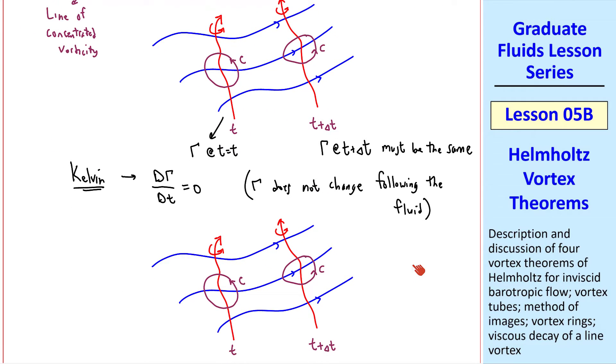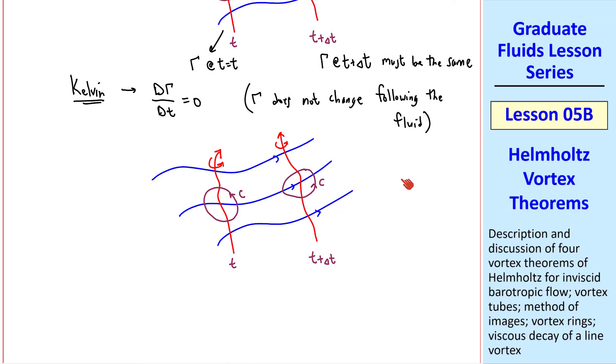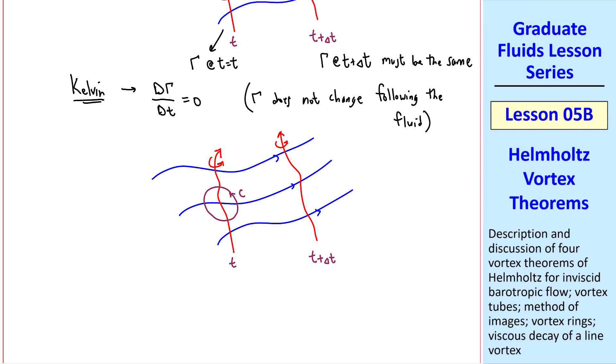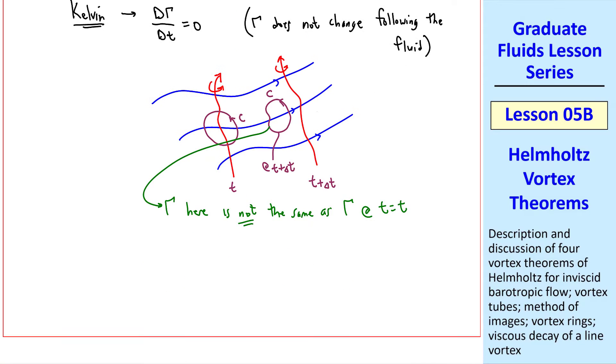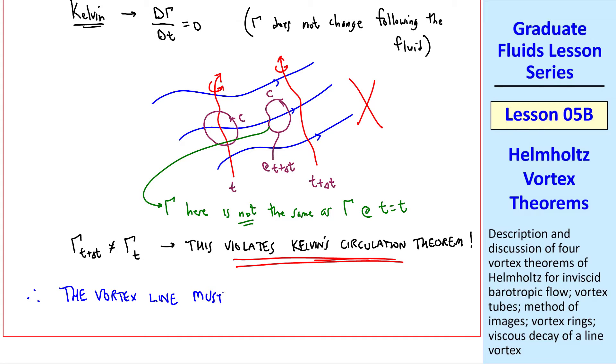Here's another way to look at it. Suppose the vortex line moved faster than the fluid, so that our closed contour was here at time t plus delta t. Then this contour is moving with the fluid, but the line vortex is not. The gamma here is not the same as the gamma we calculated at t equal t. But this violates Kelvin's circulation theorem, so this is not correct. Therefore, we conclude the vortex line must move with the fluid. This is Helmholtz's first theorem.